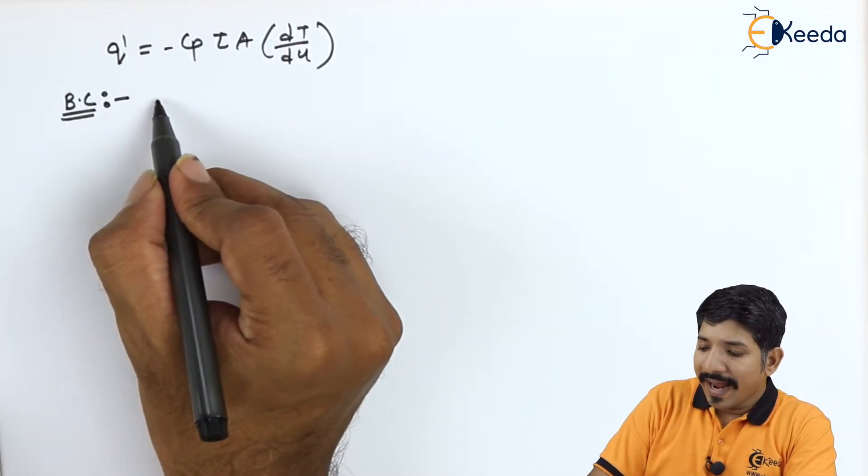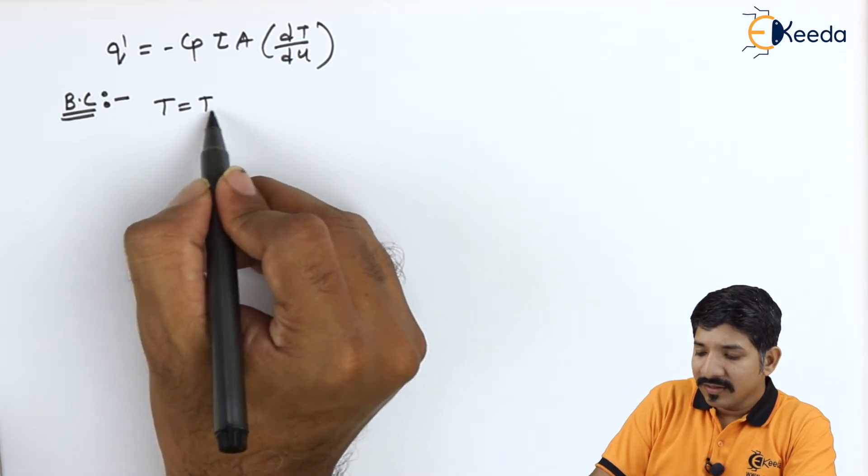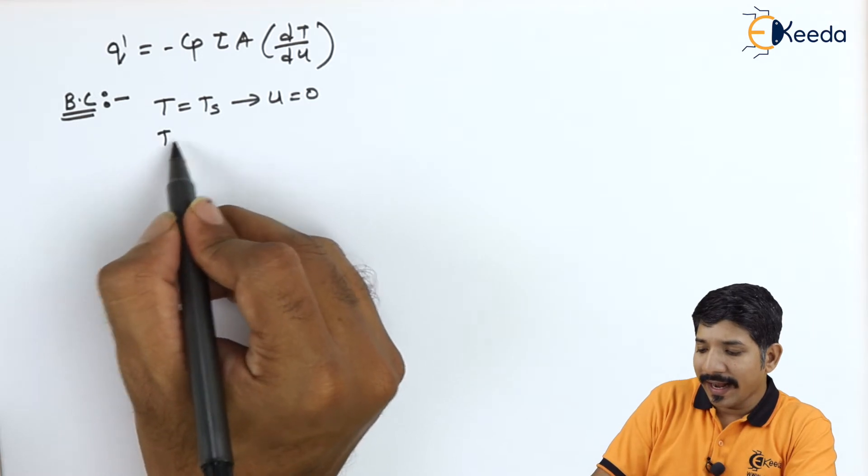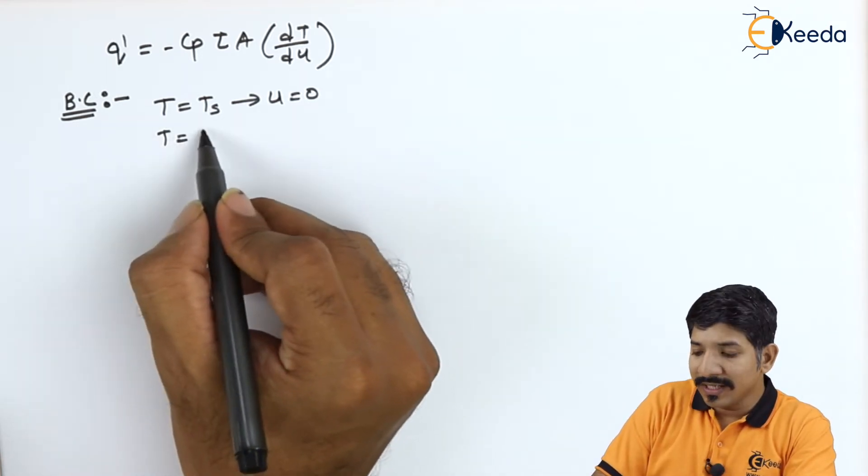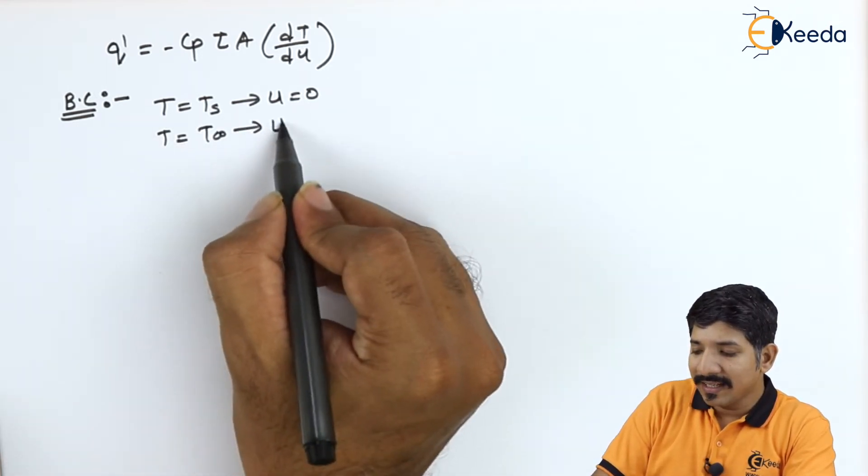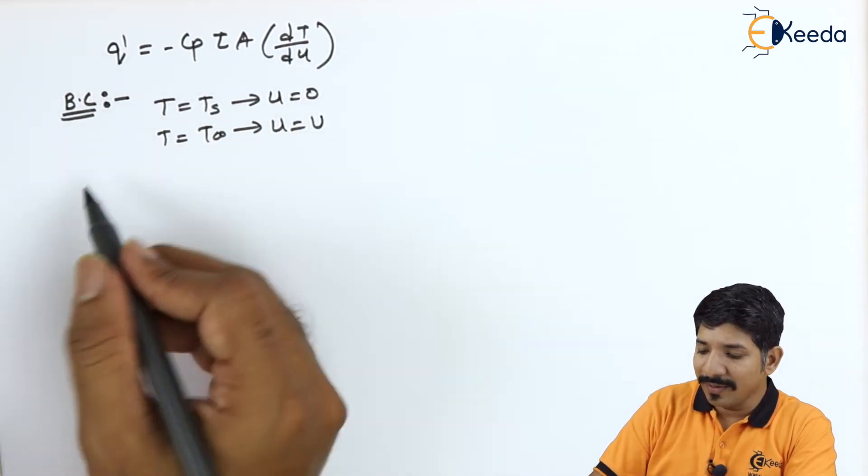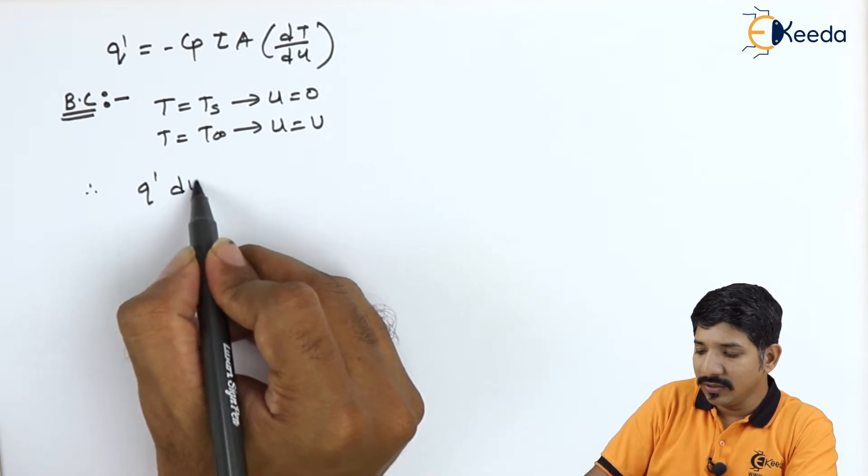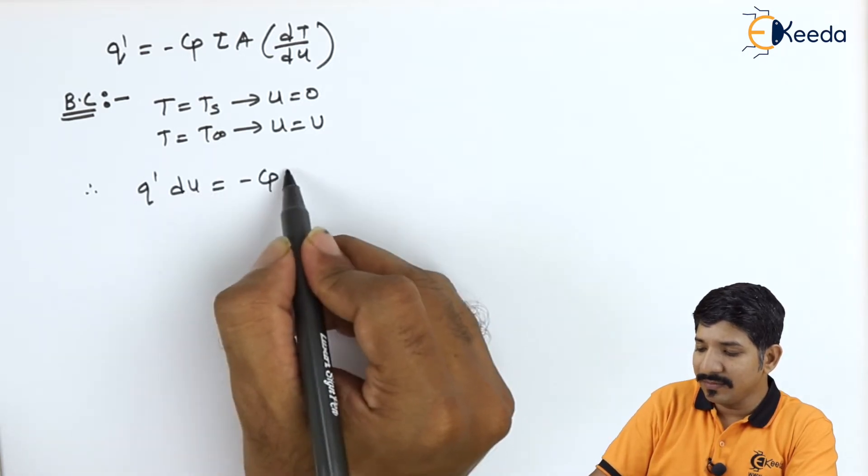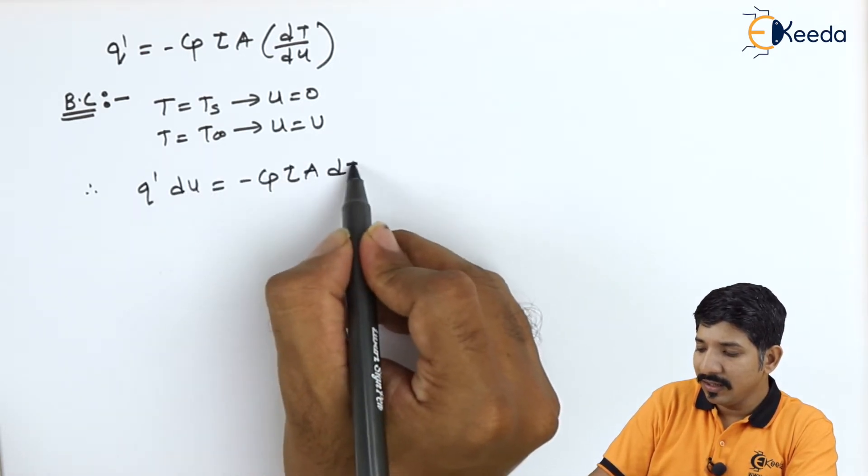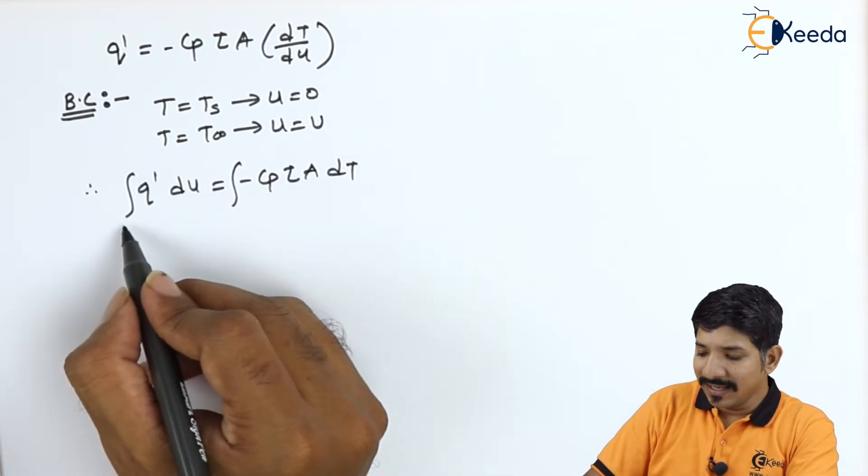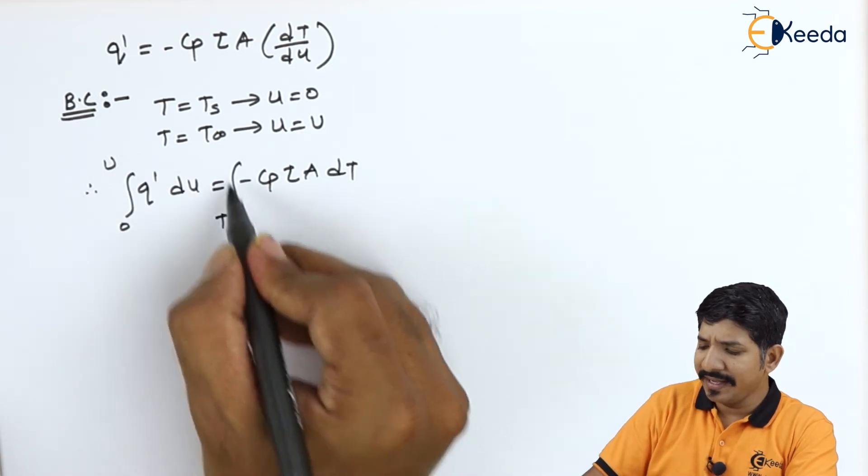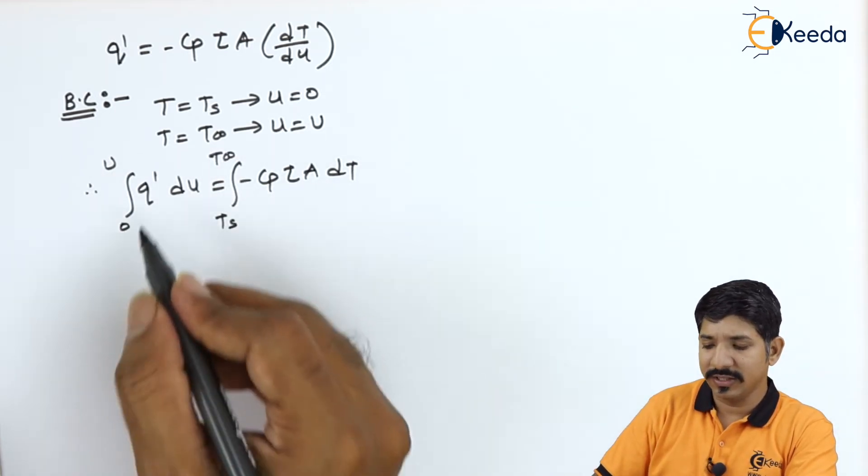So at the surface, we know the temperature is surface temperature and then velocity is 0. And at the boundary layer, we know the temperature is T infinity and velocity is capital U. So if I go for the variable separation method, that is q' into du is equal to minus Cp tau a dt, this can be integrated with the limits from 0 to capital U and Ts to T infinity.